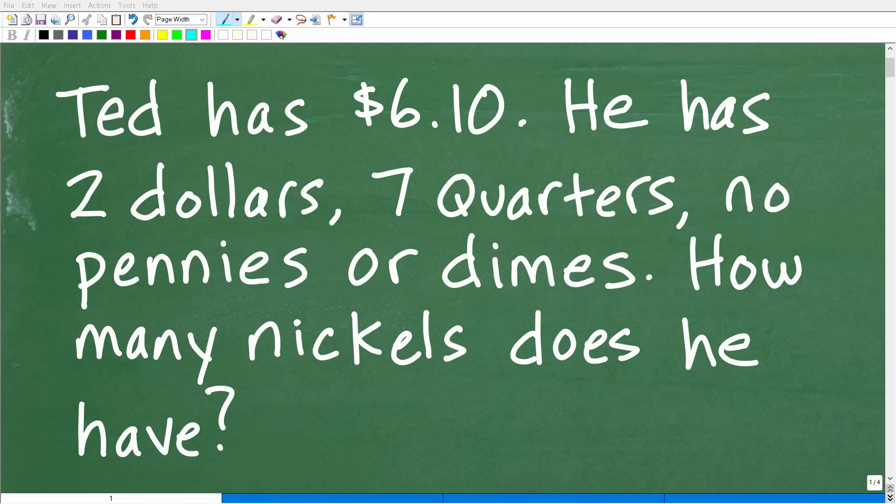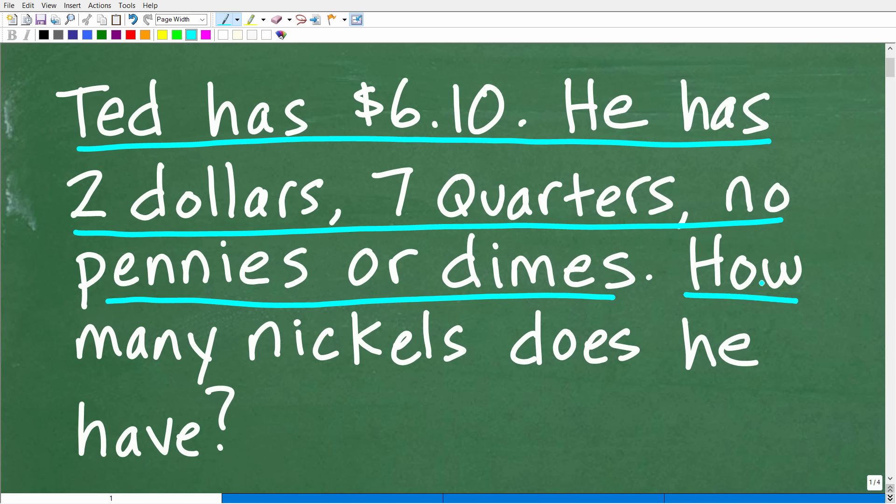Okay, so get ready to put your math skills to work on solving this interesting little math word problem. Matter of fact, let me go ahead and read the problem. It is the following. Ted has $6.10. He has $2, 7 quarters, no pennies or dimes. How many nickels does he have?